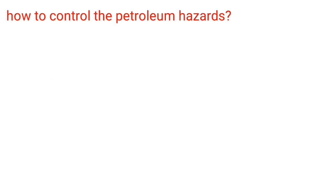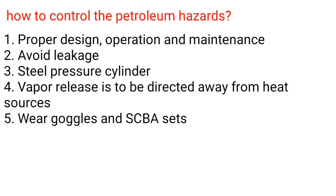How to control petroleum hazards: 1. Proper design, operation, and maintenance. 2. Avoid leakage. 3. Use steel pressure cylinders. 4. Vapor release is to be directed away from heat sources. 5. Wear goggles and SCBA sets.